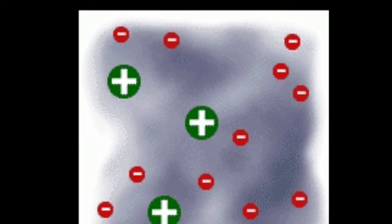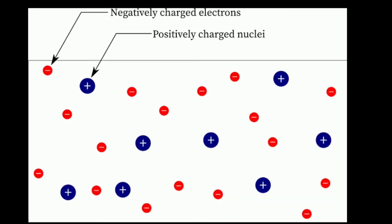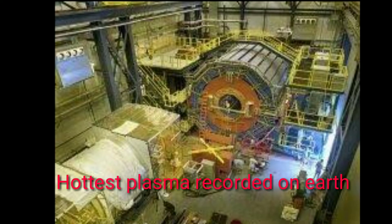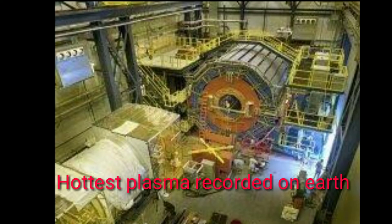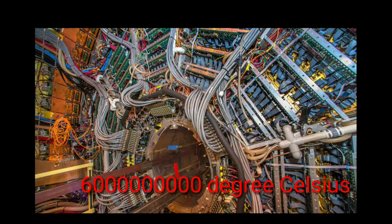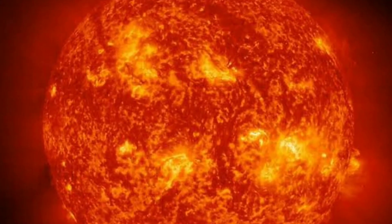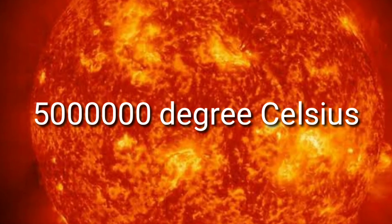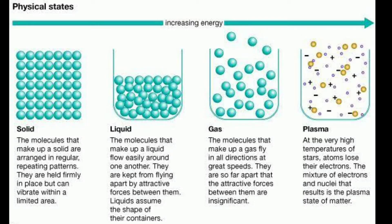Packed full of charged particles — positive ions, electrons and negative ions — plasma can also be created by breaking any molecular bond with a magnetic field via a device such as a laser. The record for the hottest plasma formed on Earth measures a scorching 6 trillion degrees Celsius, definitely hotter than the temperature of the center of the sun, which comes in at 5 million degrees Celsius.